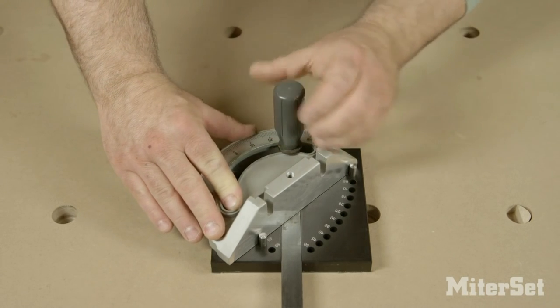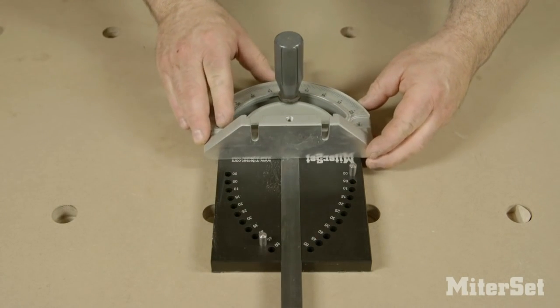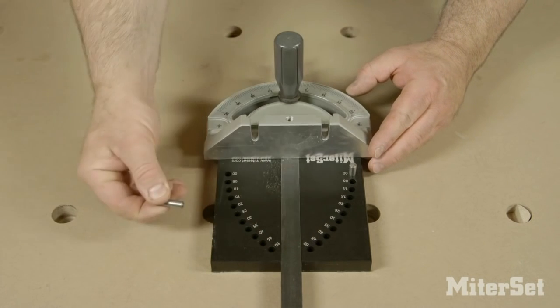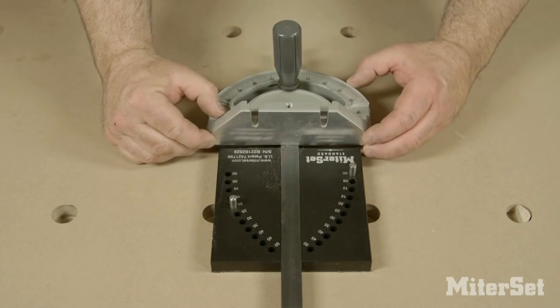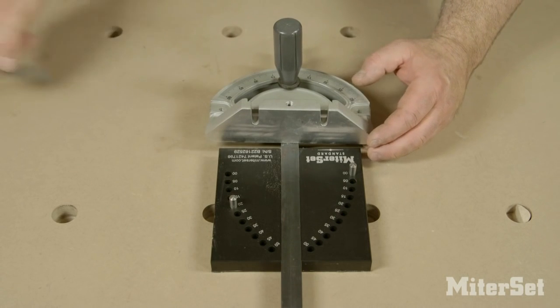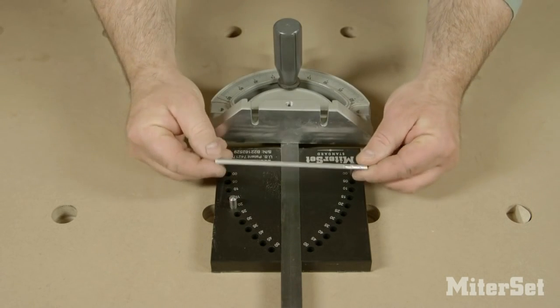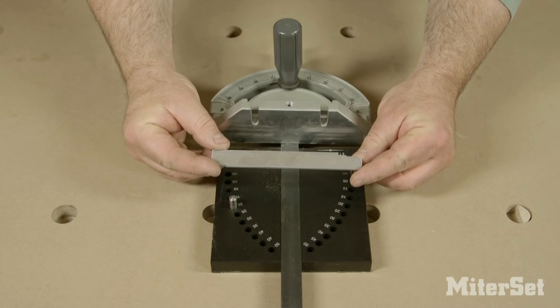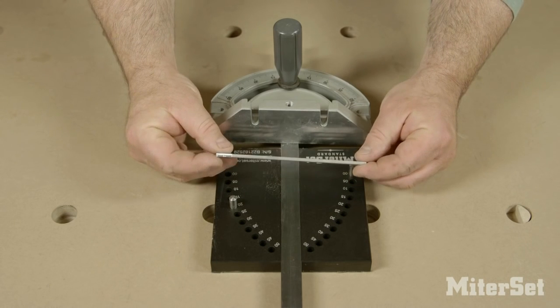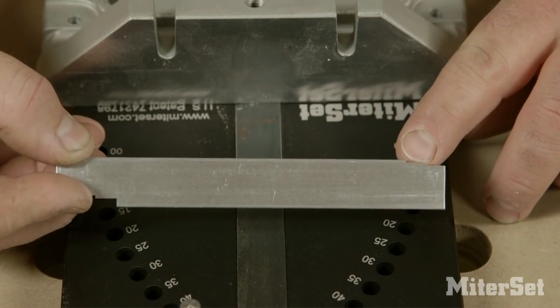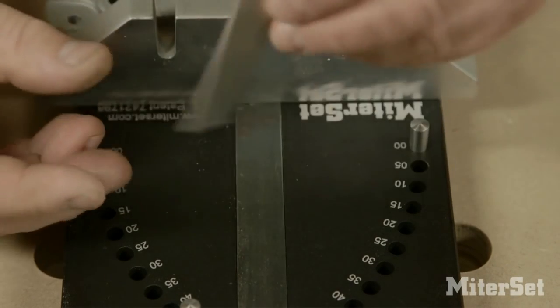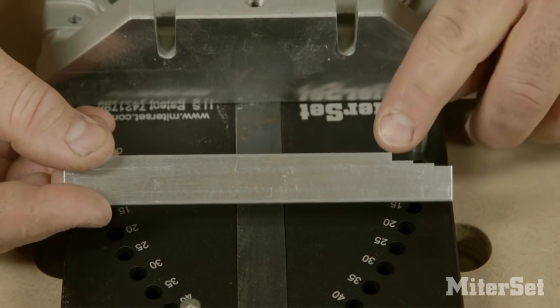Let's take a 22 and a half degree angle. I take my pin and put it in the 20-degree hole. Now I take the detent bar that comes with MiterSet Standard and you can see that this has notches in it from half a degree up to two and a half degrees.